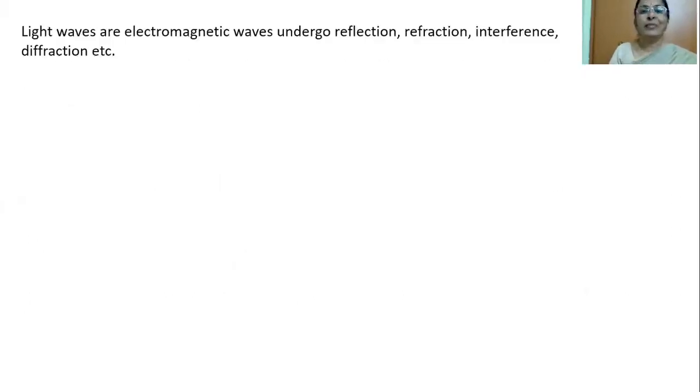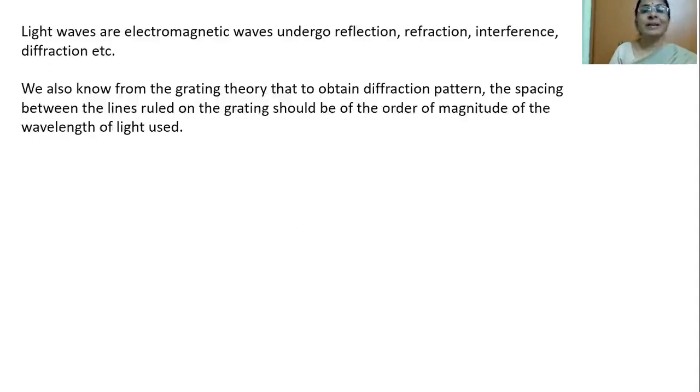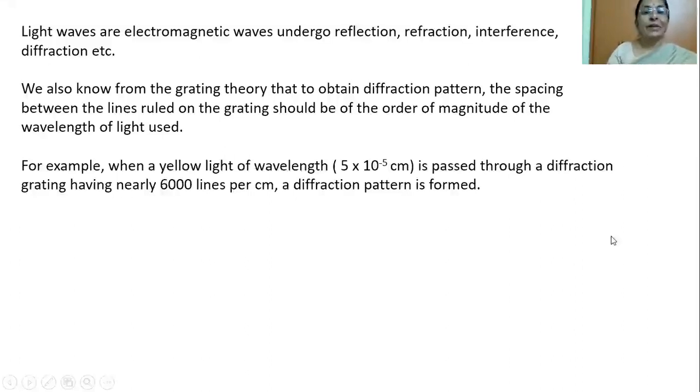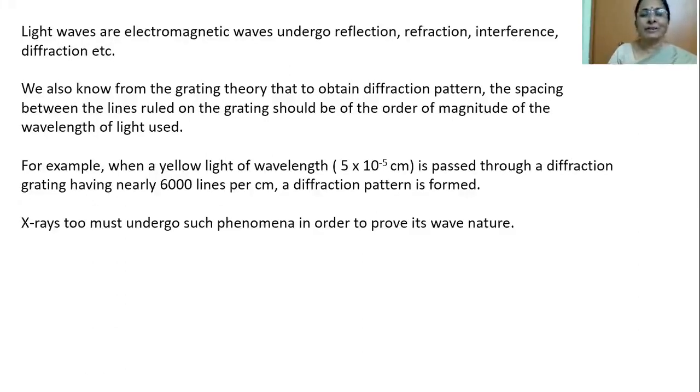We know light waves are electromagnetic waves and they could undergo reflection, refraction, interference, diffraction, etc. We also know from the grating theory that to obtain diffraction pattern, the spacing between the lines drawn on the grating surface should be of the order of magnitude of the wavelength of the light used. For example, when a yellow light of wavelength 5 times 10 to power minus 5 centimeter, otherwise 5000 angstrom unit is passed through a diffraction grating having nearly 6000 lines per centimeter, a diffraction pattern is formed.